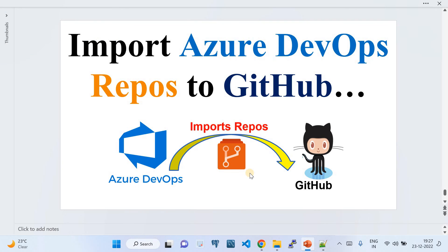That's all. I haven't done any automation here — I just used the built-in GitHub and Azure DevOps options to import the repository from Azure DevOps to GitHub in a blink of an eye. Please do subscribe to my channel — that would really encourage me. Thank you so much and see you in the next video.